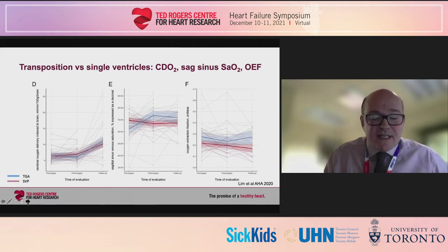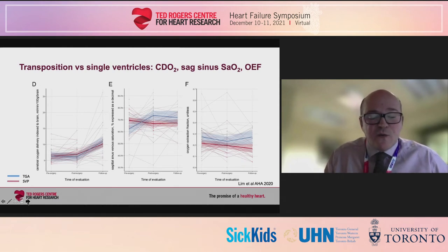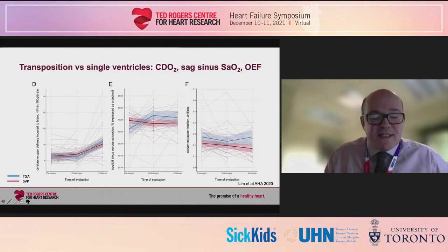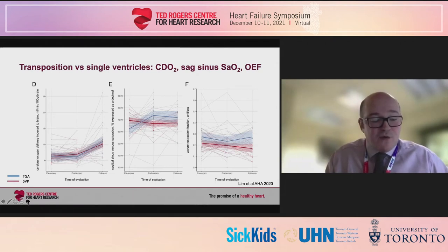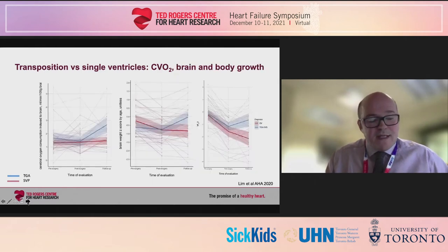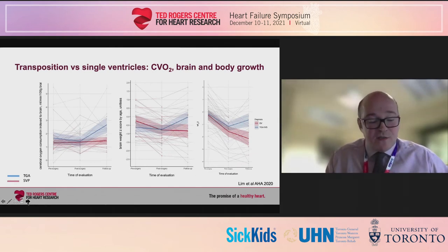Transposition patients initially exhibited a marked increase in cerebral venous oxygen saturations following surgery, which began to fall again at the follow-up scan. This resulted in an increase in cerebral oxygen extraction in the setting of transposition, whereas infants with single ventricle heart showed rather stable venous saturations, reflecting a gradual decline in cerebral oxygen extraction. While patients with transposition showed an increase in cerebral oxygen consumption following complete repair, there was no such increase in patients with single ventricle hearts, which was mirrored by a similar pattern in terms of poor body and brain growth.